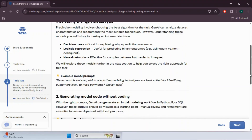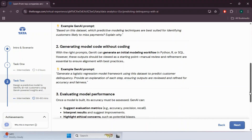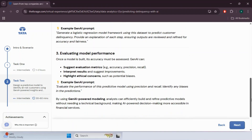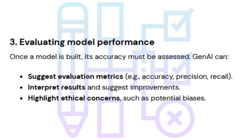The second step is generating model code — without coding expertise, Gen AI can generate an initial modeling workflow in Python, R, or SQL. The third step is evaluating model performance: once a model is built, its accuracy must be assessed. Gen AI can suggest evaluation metrics such as accuracy, precision, and recall, and highlight ethical concerns such as potential bias.